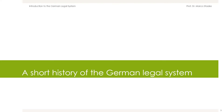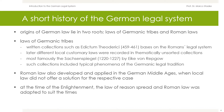The principles of German law lie in two roots: the laws of Germanic tribes as well as the law of the Romans. The Germanic tribes had written law collections, such as the Edictum Theoderici. These law collections were based on the Romans' legal systems since the Germanic tribes lived on former Roman areas and therefore had to integrate the Romans' legal systems. Beginning in the 12th century,